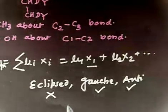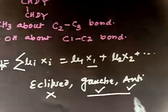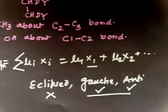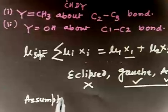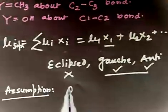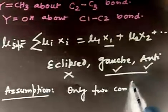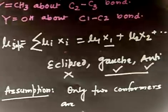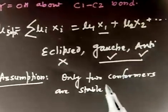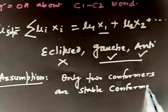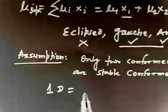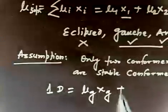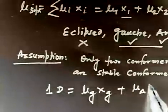Since eclipsed is not stable, I will assume this solution contains only two conformers — that is the assumption I am taking, and it is a valid assumption. Only two stable conformers: gauche as well as anti. Now I can apply the formula, so μ_solution equals 1 Debye, which gives μ_gauche·x_gauche + μ_anti·x_anti.